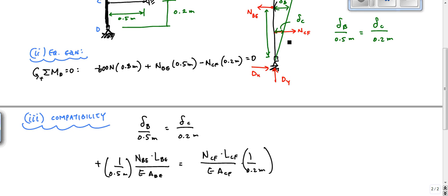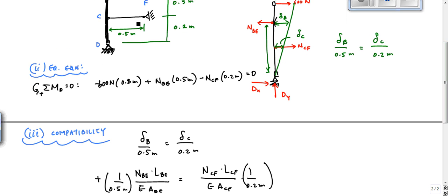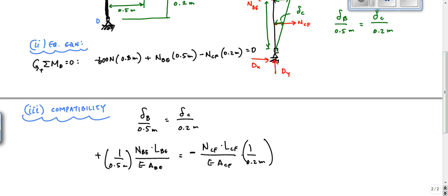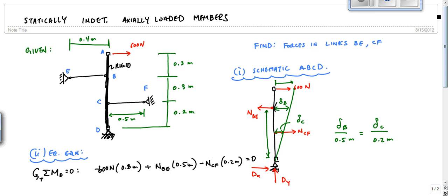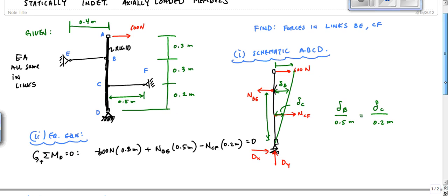This jives with the way you drew this drawing, plus this deformation makes sense. But here, this deformation, which implies compression over here of CF, does not make sense with the way you drew the force. But you drew the force's tension. That means that it doesn't make sense, so you need a negative sign here to correct that. And then, assuming EAs are the same, let's assume EAs are the same. EA all same in links right here.